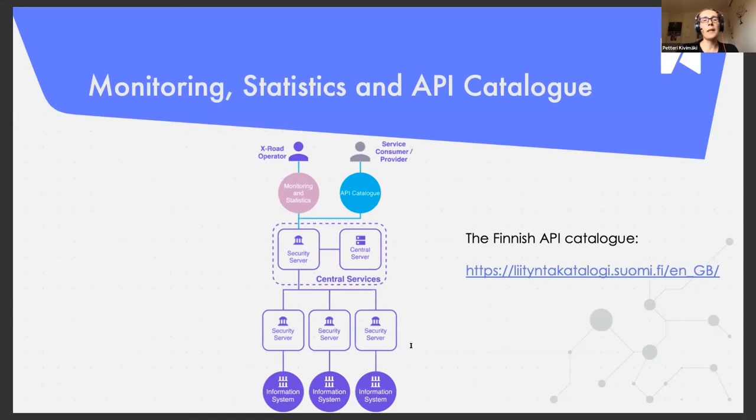Then a few words about meta-services. So like I shortly mentioned earlier, they are services provided by the security server, built-in services that can be used to query information about available services in the X-Road ecosystem. One way to utilize the meta-services is to query OpenAPI or WSDL service descriptions of a service provider. A service consumer can do it, but then it can also be implemented centrally by the X-Road operator.